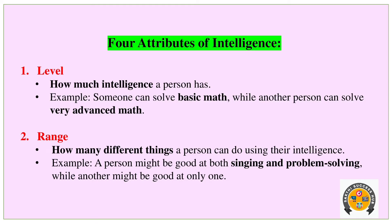Range refers to how many different things a person can do using their intelligence. For example, a person may be good at both thinking and problem solving, while others may be good at only one. How many different skills a person can apply — that is the Range.